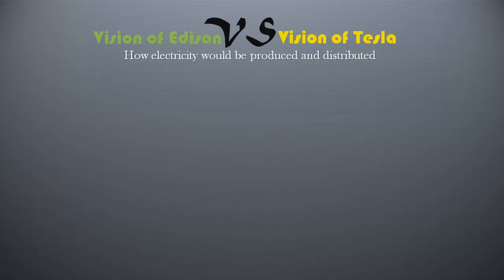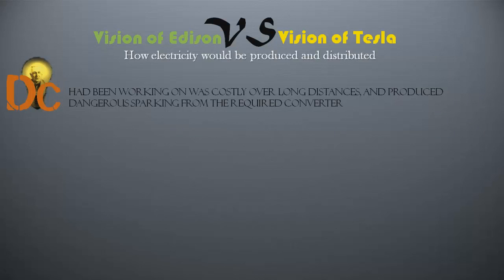The DC current that Edison, backed by General Electric, had been working on was costly over long distances and produced dangerous sparking from the required converter called a commutator.